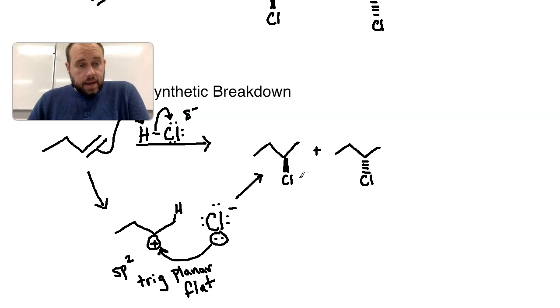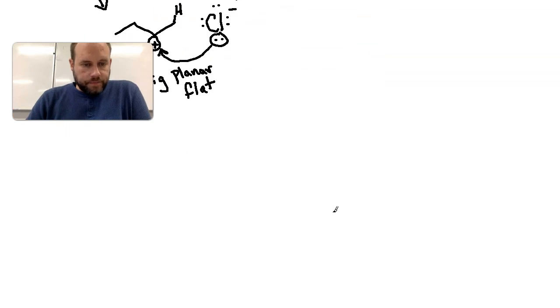Sometimes you may see in textbooks it'll say plus enantiomer or plus racemic mix, and that's just saying, yes, in a 50-50 ratio, the other version will also form. But as long as you're aware of that, that's what's kind of important here. So to finish this off, let's just pose one more here.